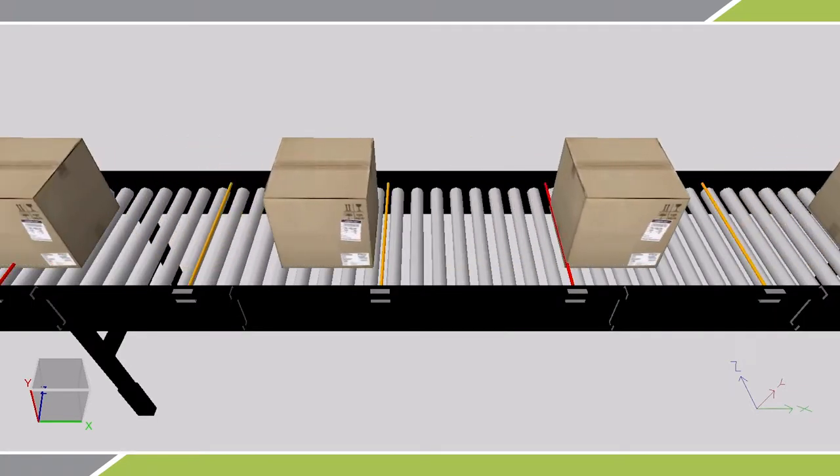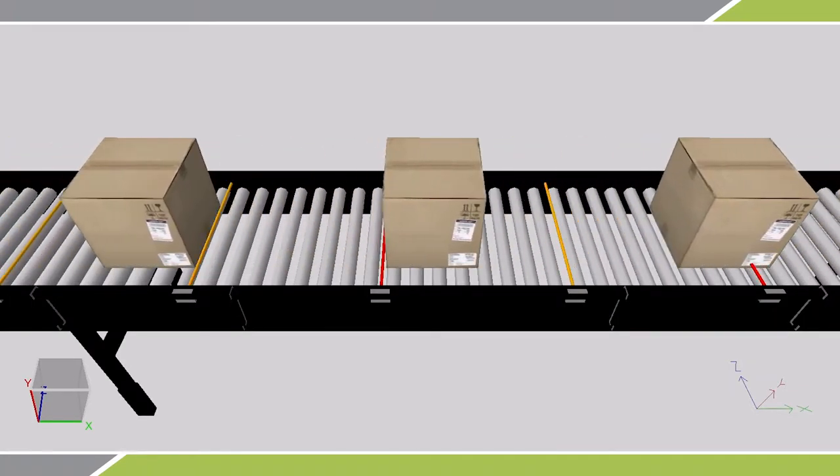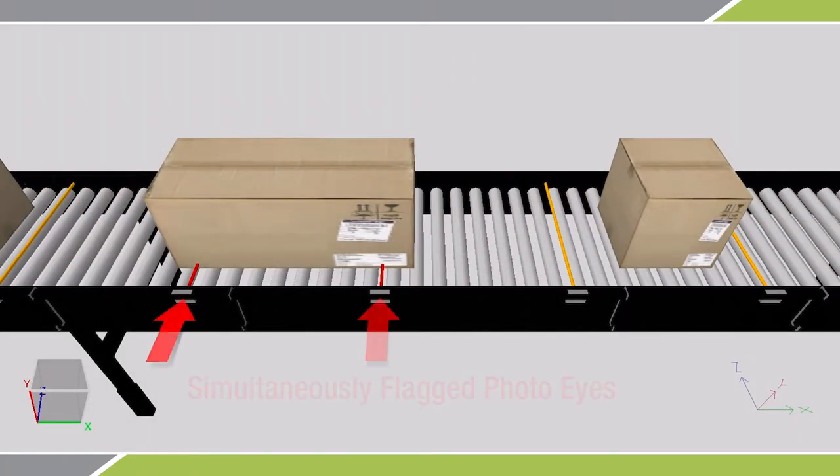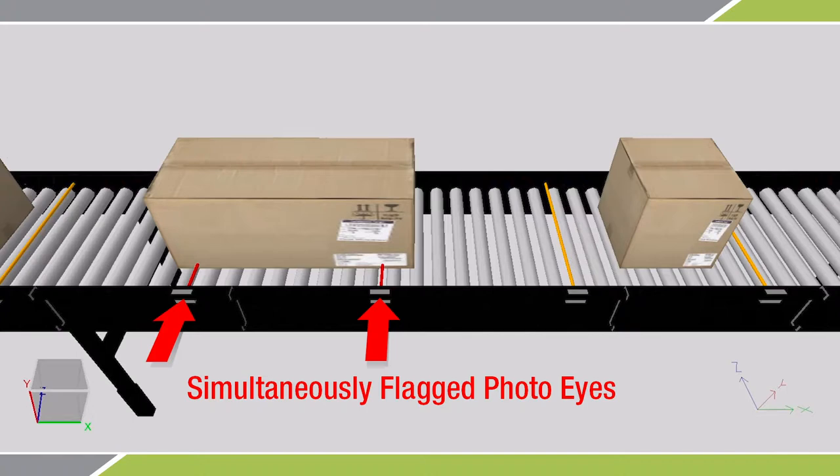So what happens when product is longer than zone length? Two zone photo eyes are flagged simultaneously. Traditionally, the upstream zone drive roller would shut off, leaving the downstream zone with the burden of pulling product off the upstream zone.